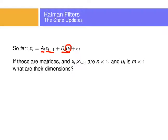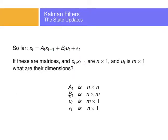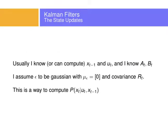Now if these are matrices — because we have multivariate, many sensors, many things going on — these will be the dimensions of those matrices. It's left as an exercise to figure out why those would be the dimensions if the state is an n-by-1 matrix and the actions are an n-by-1 matrix. Usually I know or can compute the previous state and my actions, and I know how the robot behaves so I can update its state based on some equations.